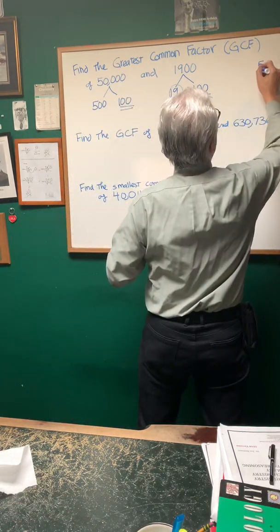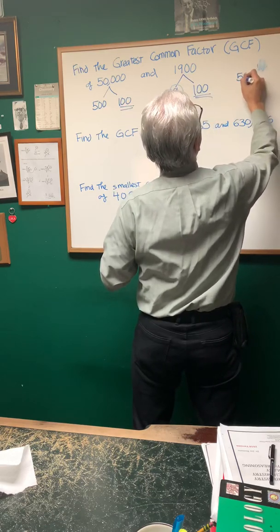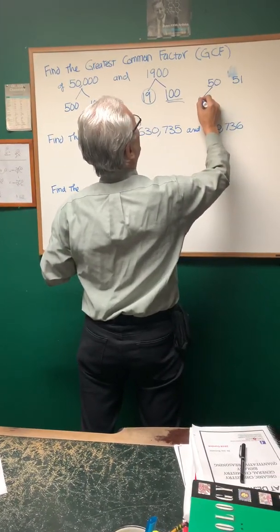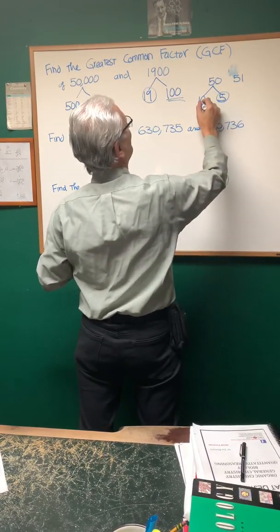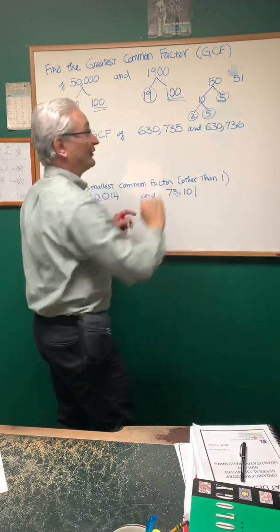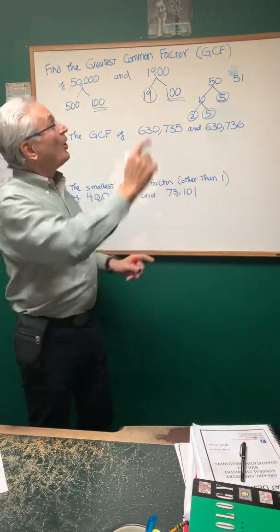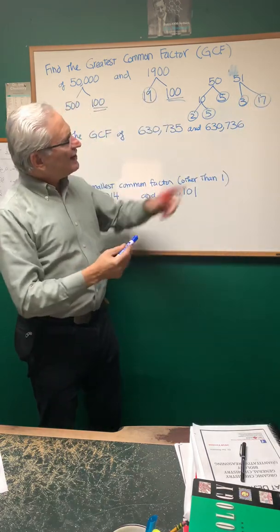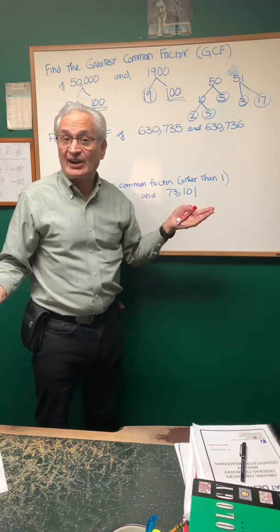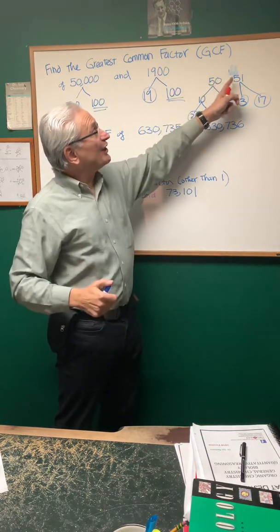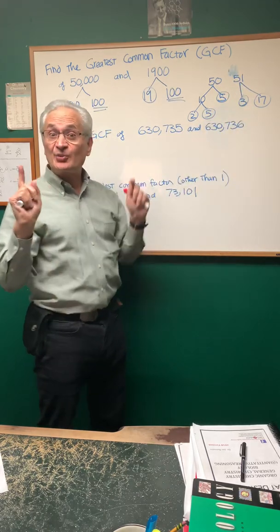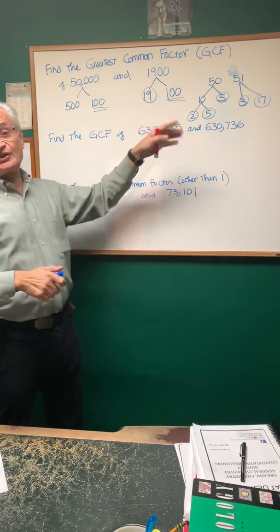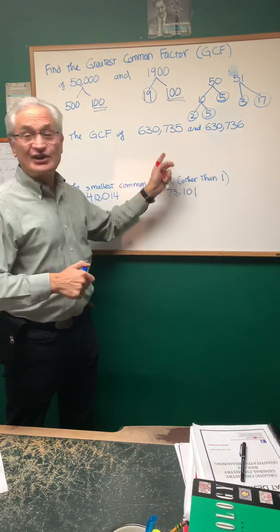If you don't believe me, just take an example — how about 50 and 51? Let's find the prime factorization of each as an example of two consecutive numbers. For 50: it's 10 times 5, and 10 is 2 times 5, so the prime factorization of 50 is 2 times 5 times 5. The prime factorization of 51 is 3 times 17 — both prime numbers. They have nothing in common. The greatest common factor of 50 and 51, two consecutive integers, is 1. Likewise, 630,735 and 630,736 are consecutive numbers, so their greatest common factor is 1.